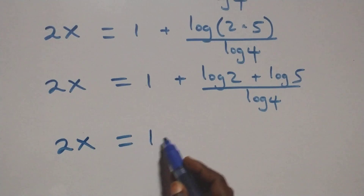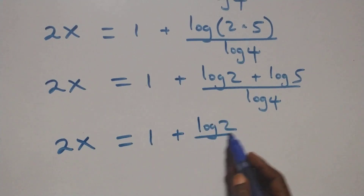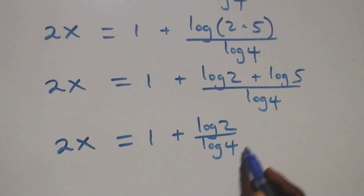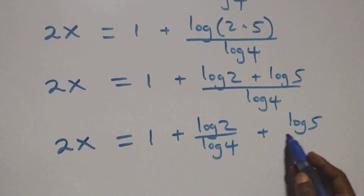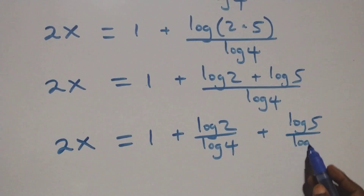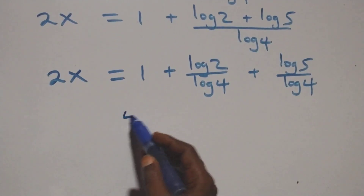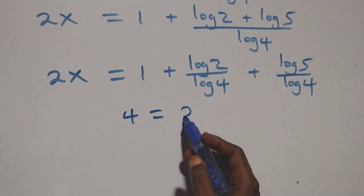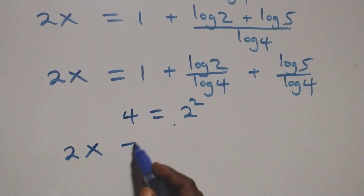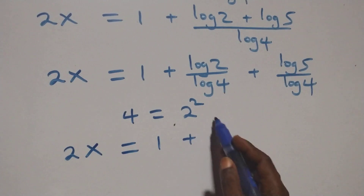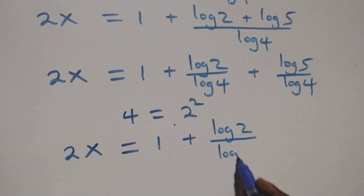We separate into two fractions: 2x equals 1 plus log 2 over log 4 plus log 5 over log 4. Also, 4 can be expressed as 2 times 2, that is 2 squared. So what we have becomes 2x equals 1 plus log 2 over log(2 squared) plus log 5 over log(2 squared).